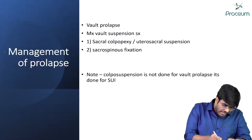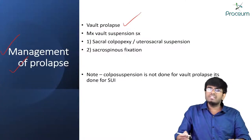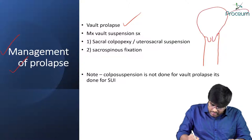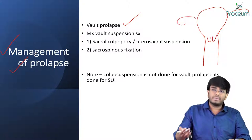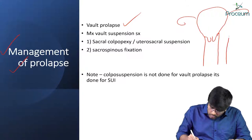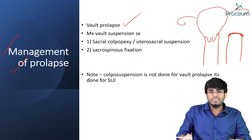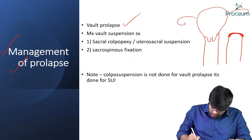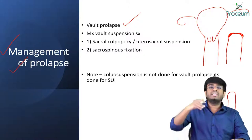Now let's discuss vault prolapse. For example, whenever you have performed a hysterectomy, you have removed the uterus, cervix, and fallopian tubes, and sutured the upper part of the vagina. After this, there is a chance that this vault area — the upper part — can prolapse down, as the vaginal vault no longer has proper support.